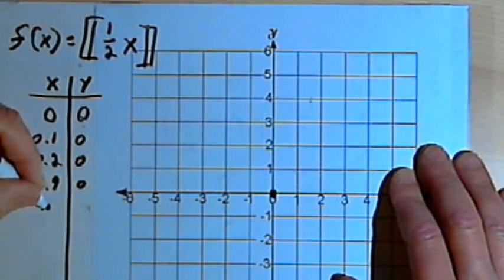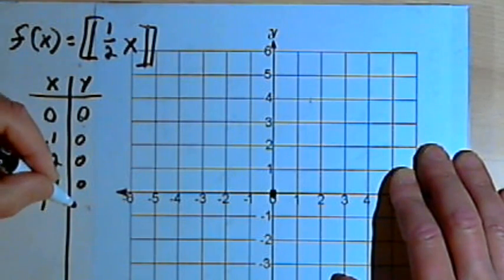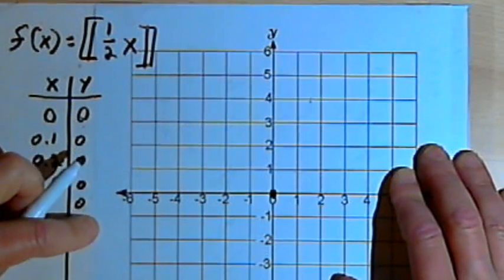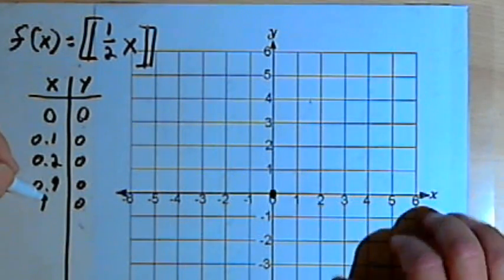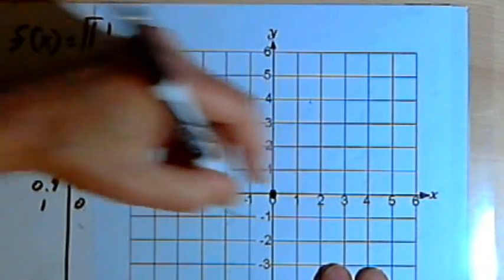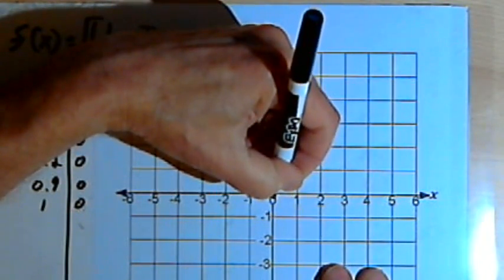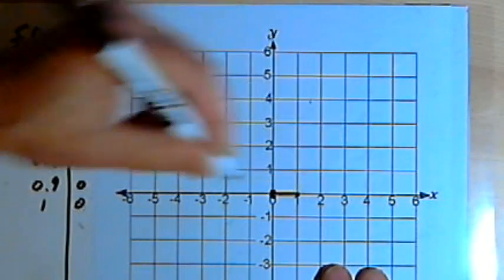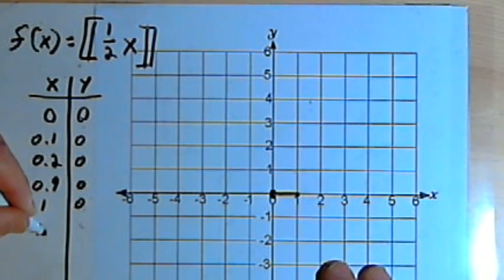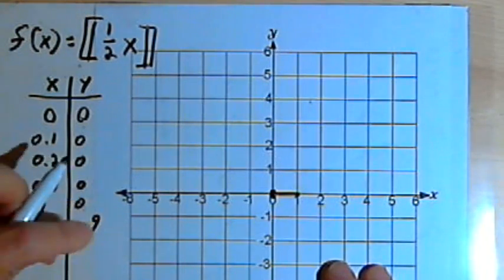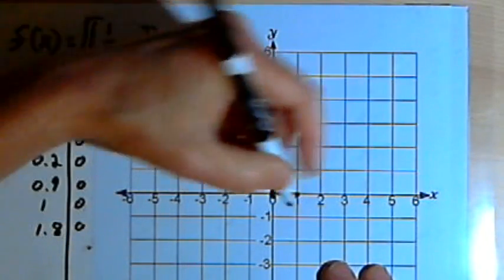Let's go up to 1. 1 half of 1 is just 0.5. So if I graph these points that I've got so far, I'm just moving along the x-axis. As I increase the x value, the y value is staying at 0. Let's go up to 1.8. Well, 1 half of 1.8 is 0.9. I've got to drop the decimal part, so I'm still there.